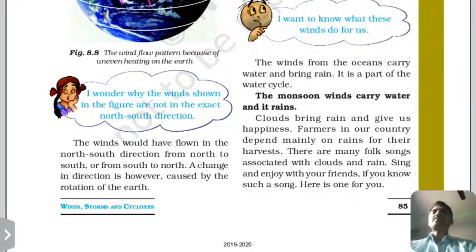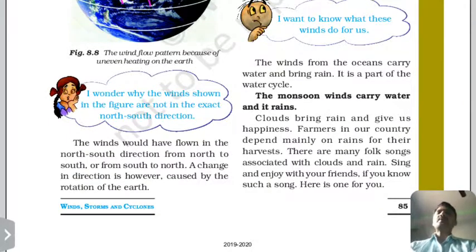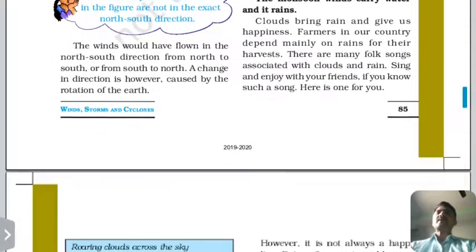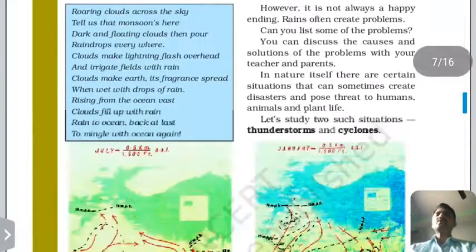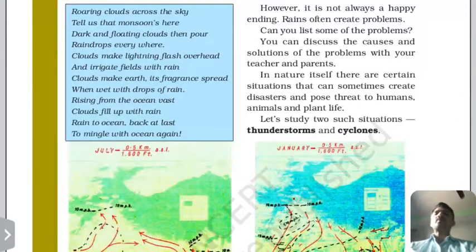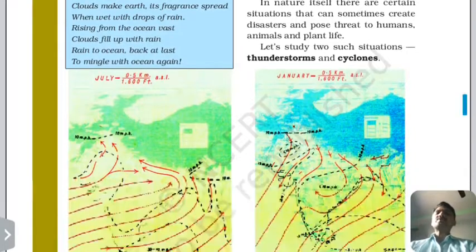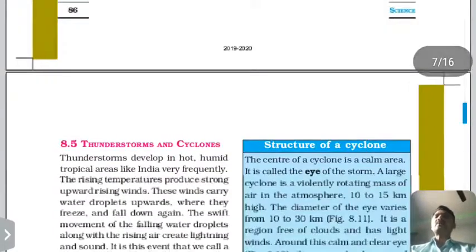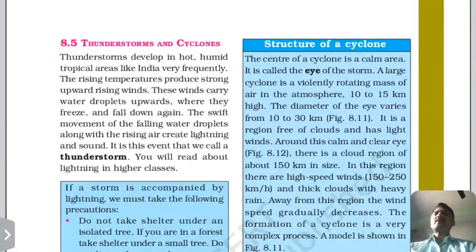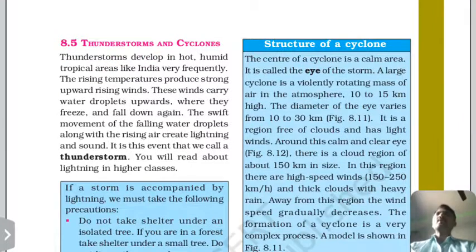The most important wind related to this is the monsoon wind. Now let us look at two important terms: thunderstorm and cyclone.